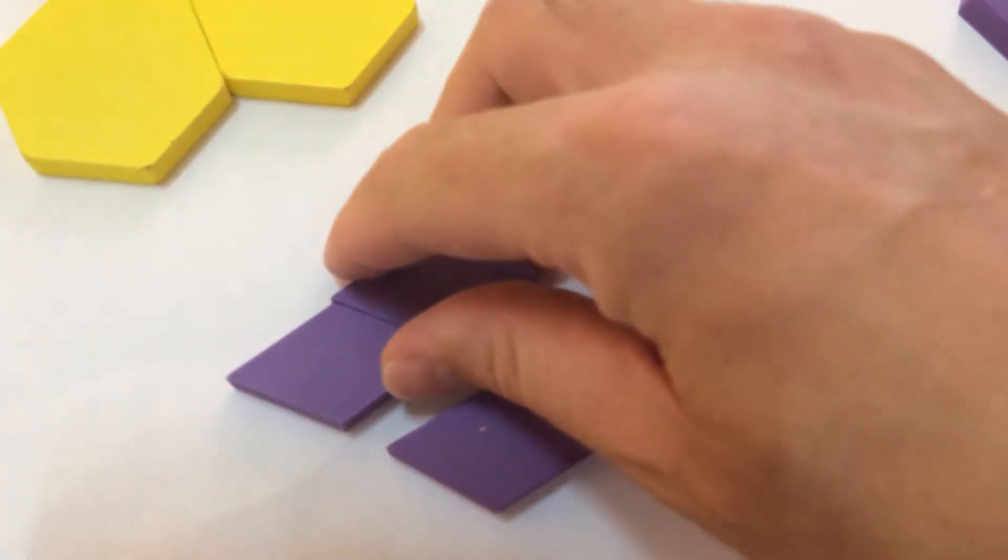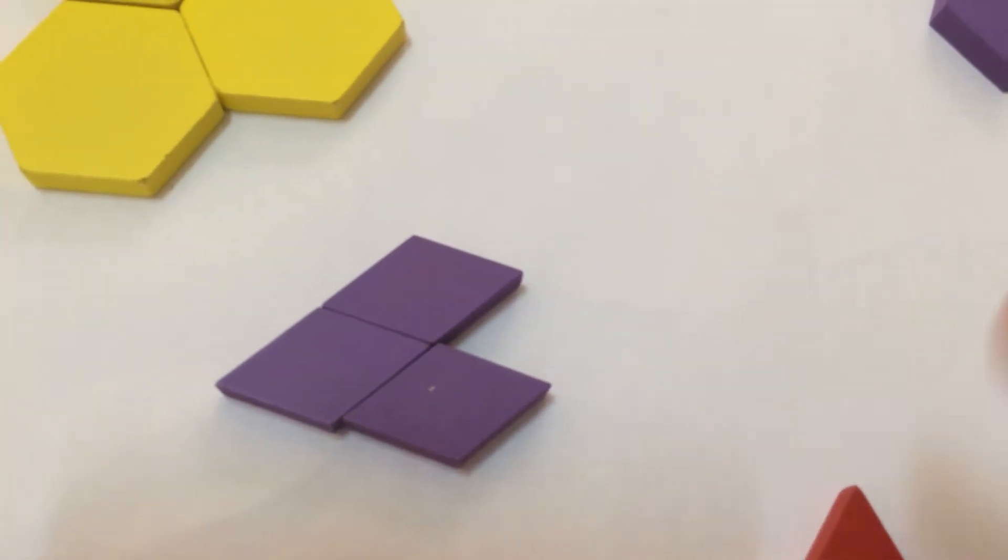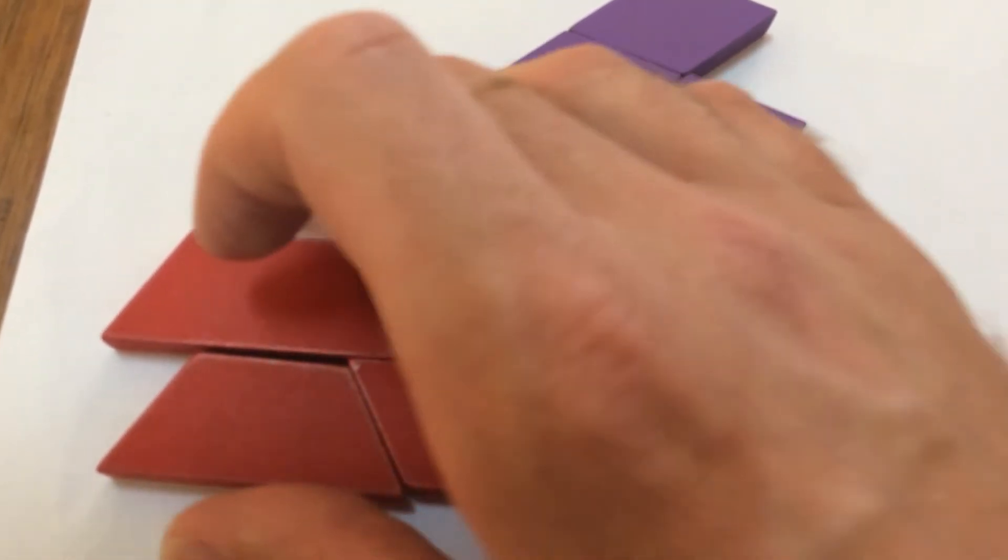These rhombus shapes fit together nicely like that, and so on. And then the trapezia can fit where they alternate like that.